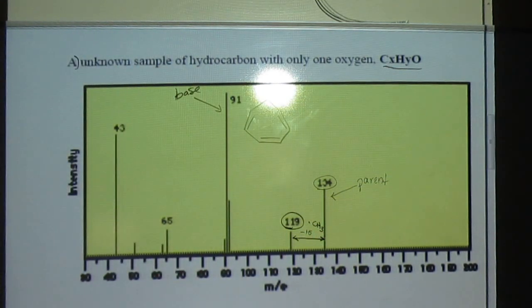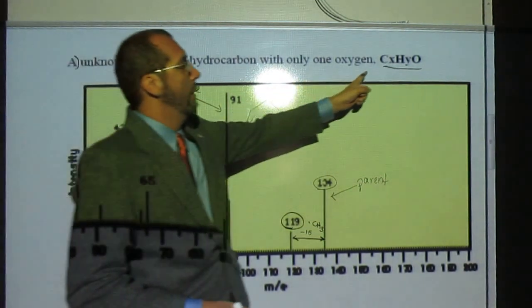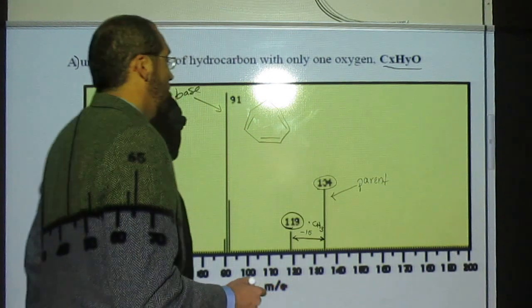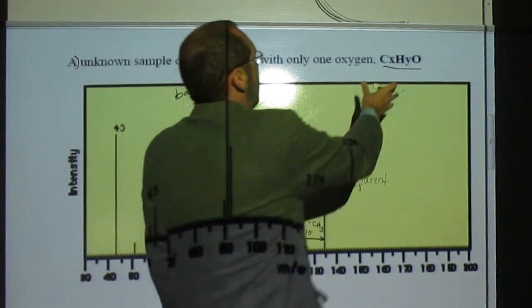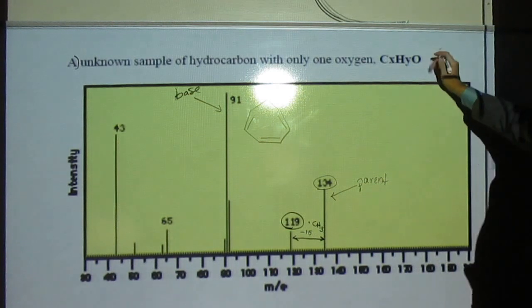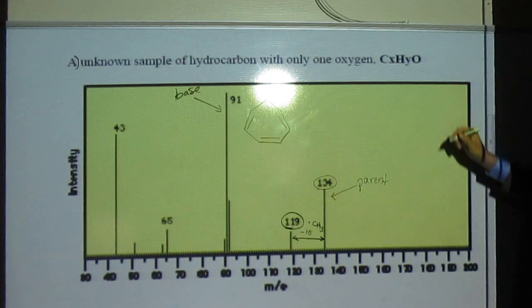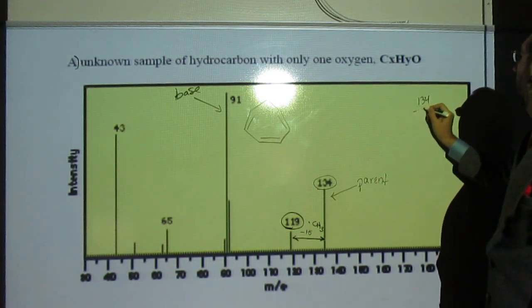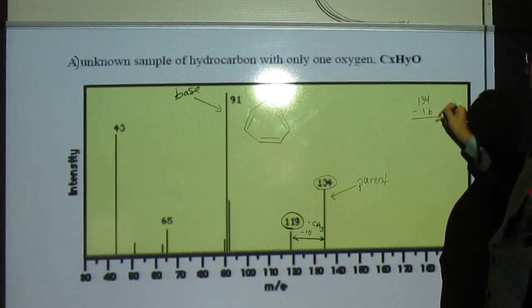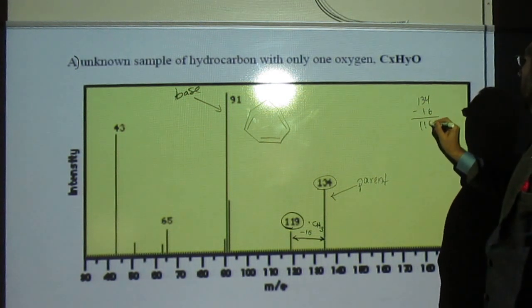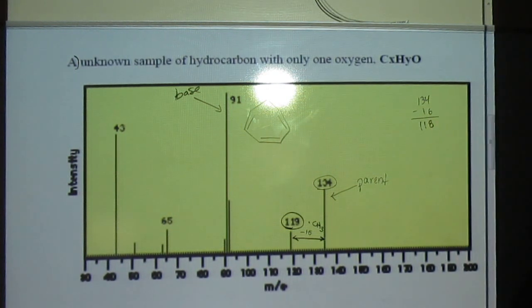Is everybody okay with that? Yes. Okay. Then the other thing we can, well, we need to know what its molecular formula is, right? So 134, and we know there's only one oxygen in there. Yes. So we can already subtract 16, right? Okay. So 134 minus 16, and that's going to give us 118.